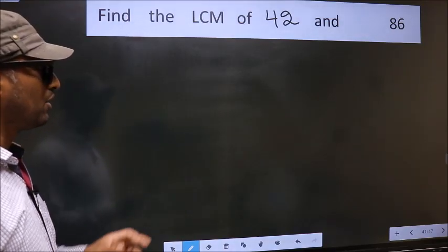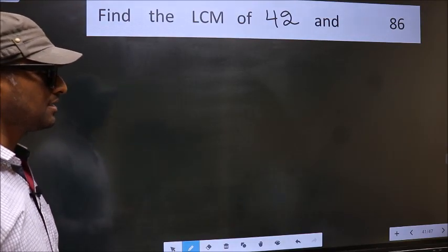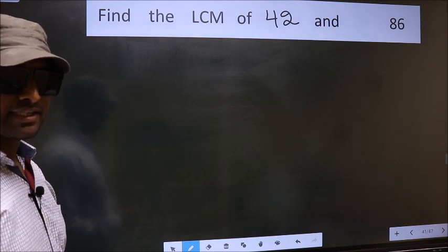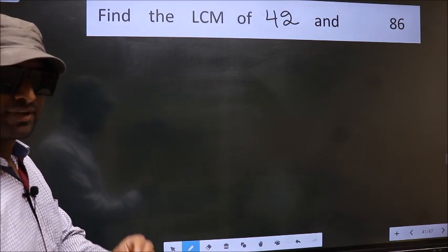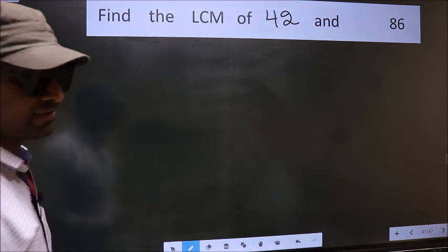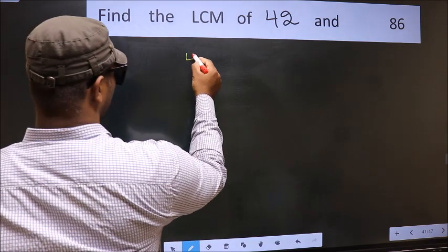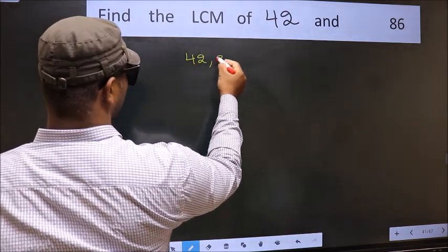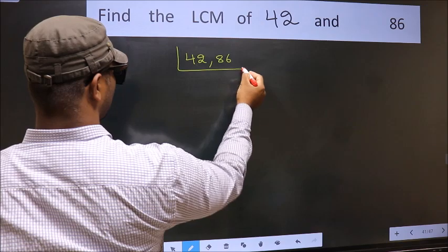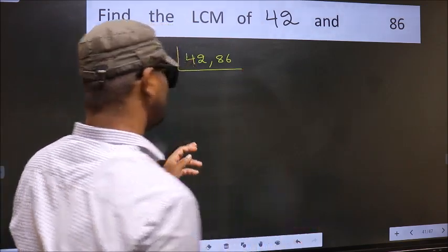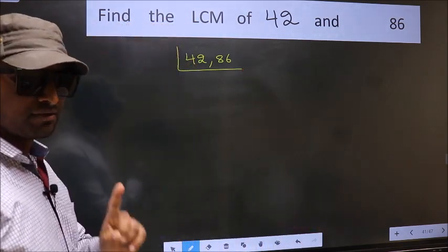Find the LCM of 42 and 86. To find the LCM, first we should frame it in this way: 42, 86. This is your step 1.